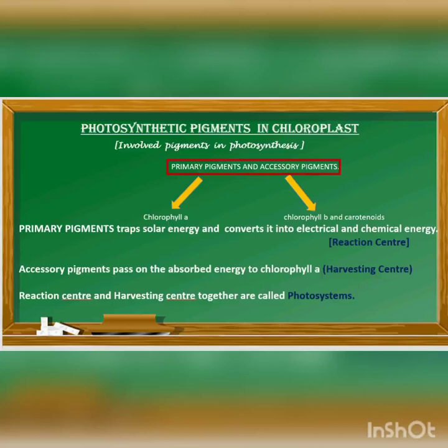The location where you find chlorophyll a is the reaction center. The function of the accessory pigment is to pass the absorbed energy back to chlorophyll. The place where you find the accessory pigment inside the chloroplast is the harvesting center.